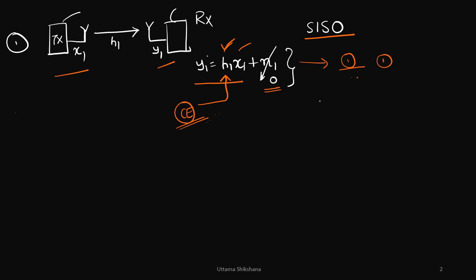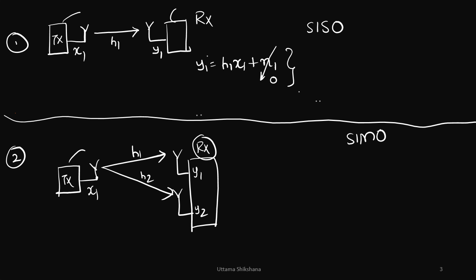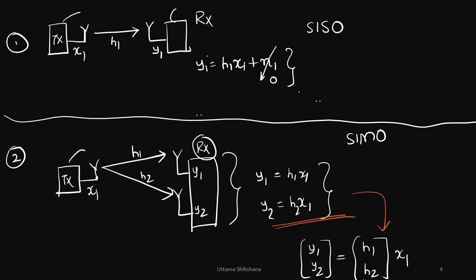So let's move to the next configuration which is single input multiple output, in which case the receiver will have two antennas. So we will get two received signals y1 and y2. We have two links h1 and h2. So the equations are y1 equals h1 x1, y2 equals h2 x1. We can write it in the vector form like this.